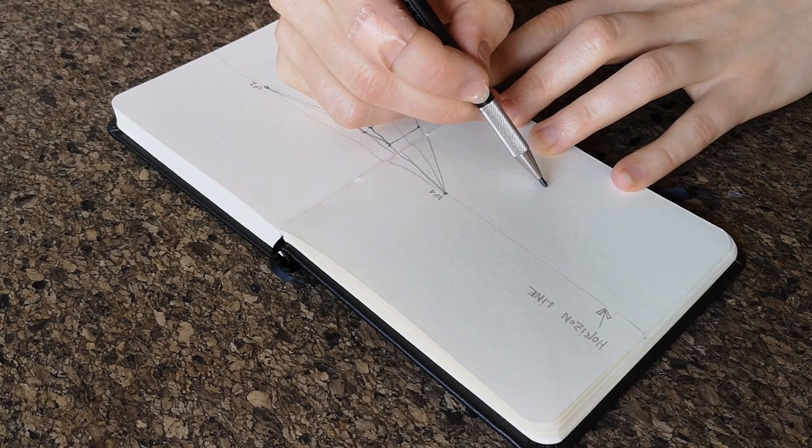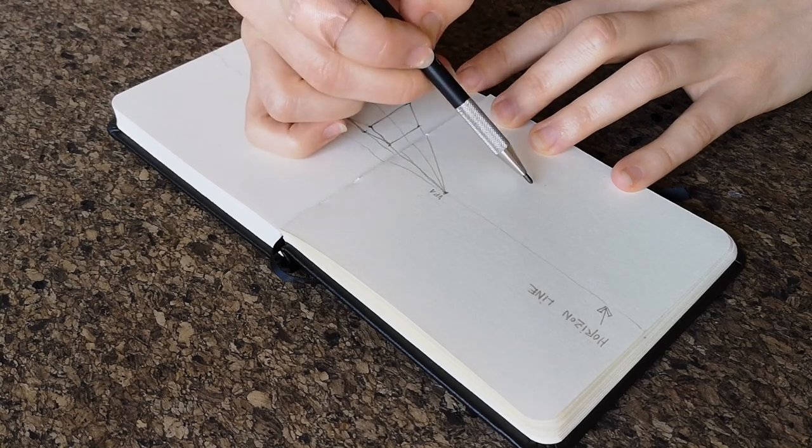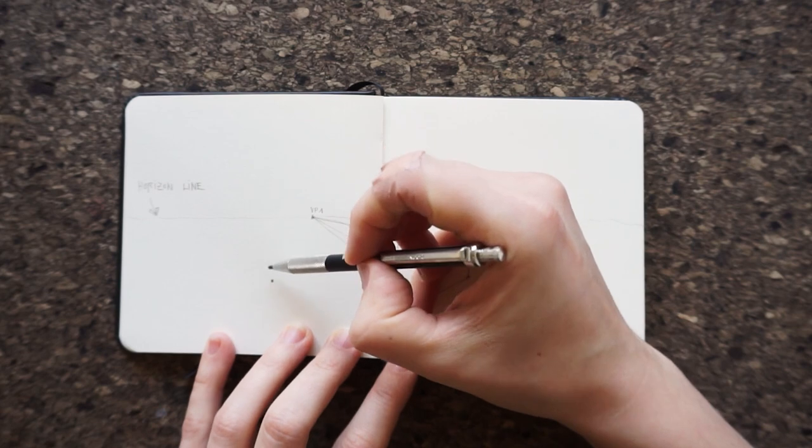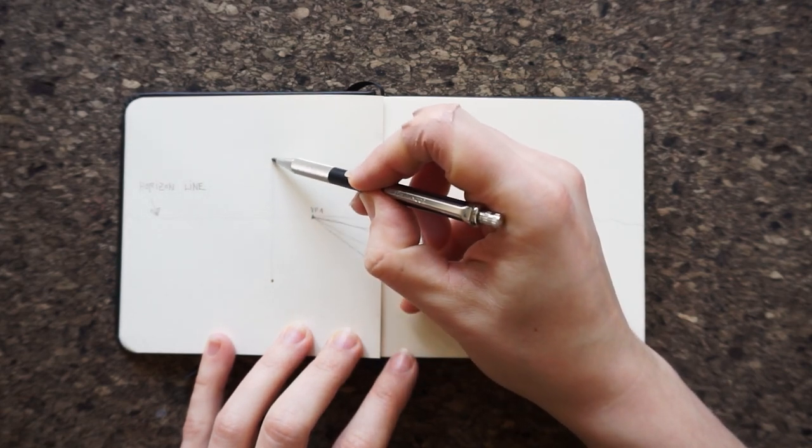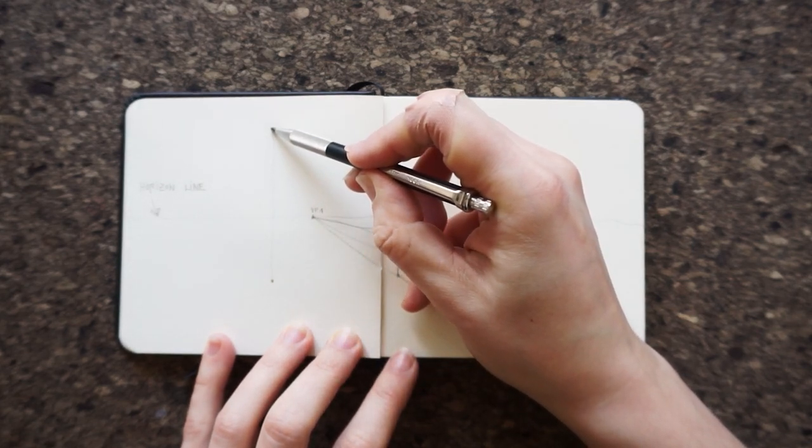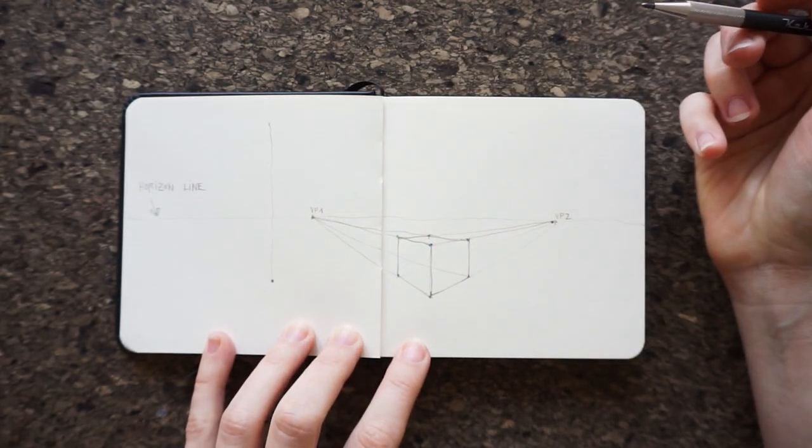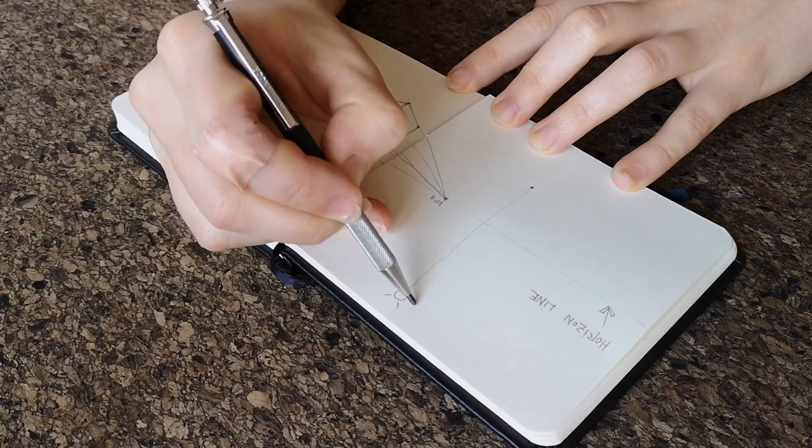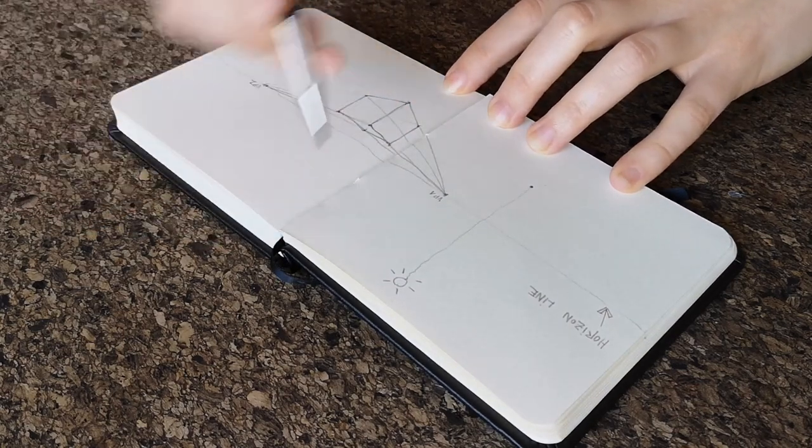Our first step is to determine where the light source stands. Pick a point below the horizon. That's the foot of our light source. We also need to determine the actual point of the light source. So draw a vertical line from the foot point all the way up to the horizon, almost to the edge.